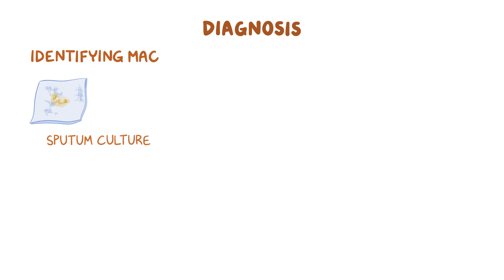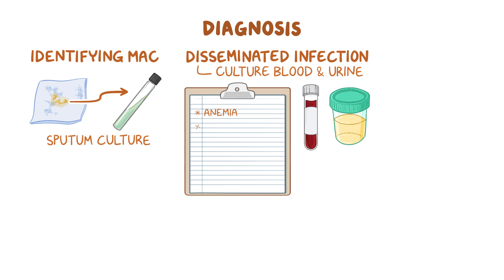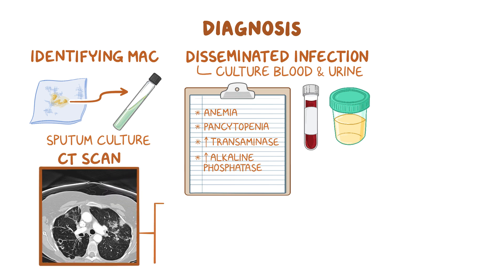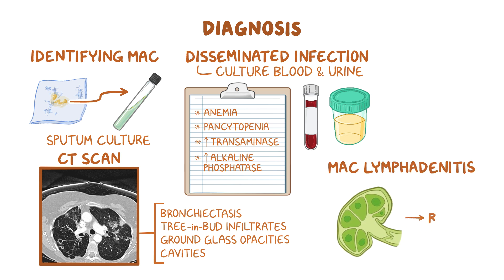Diagnosis is established by identifying MAC in the sputum using staining methods and culture. If disseminated infection is suspected, culture specimens should also include blood and urine. With disseminated infection, a complete blood count shows anemia and occasionally pancytopenia due to bone marrow suppression, and liver function tests may show high transaminase and alkaline phosphatase levels. To assess pulmonary involvement, a CT scan should be done, which may show evidence of bronchiectasis, tree-and-bud nodular infiltrates, ground glass opacities, or cavities. In cases of MAC lymphadenitis, a lymph node biopsy should be done.